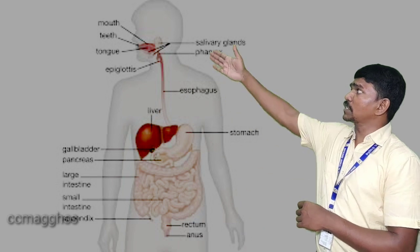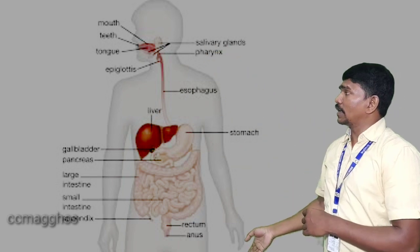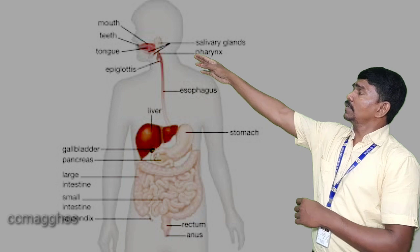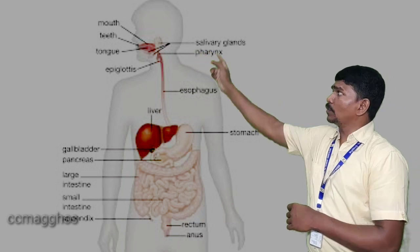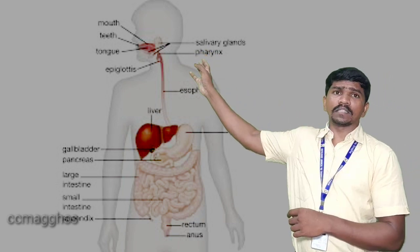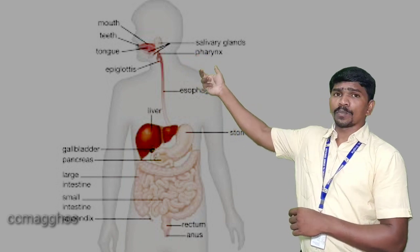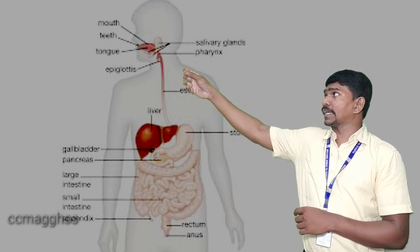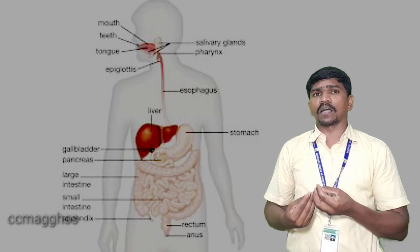The other thing we have to know is the digestive system. We have the salivary glands. This is how digestion begins — it starts in the mouth with the salivary glands.